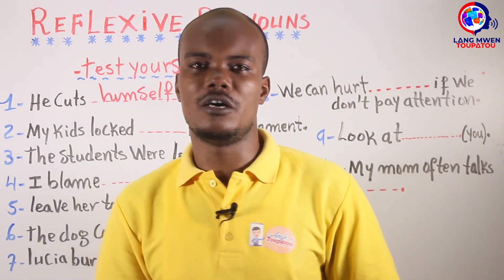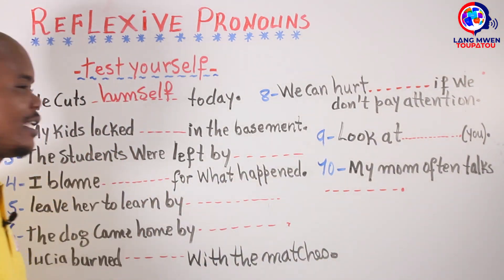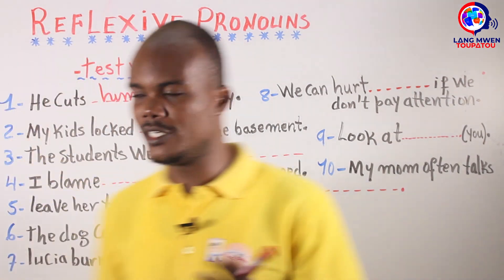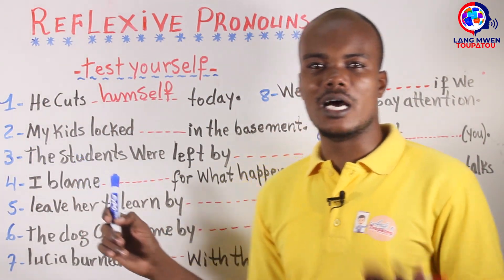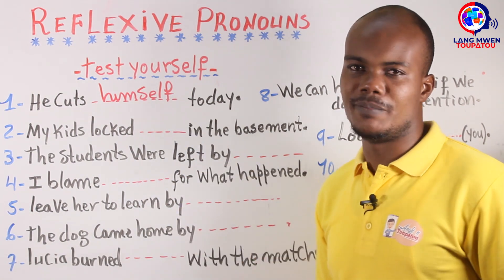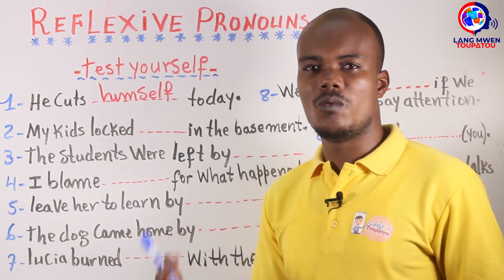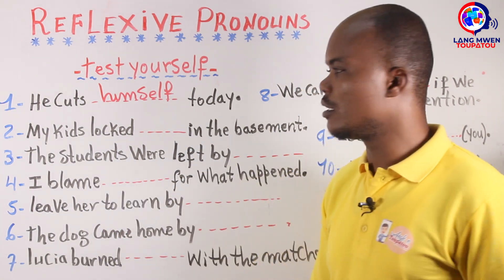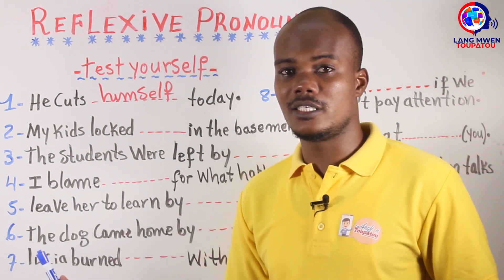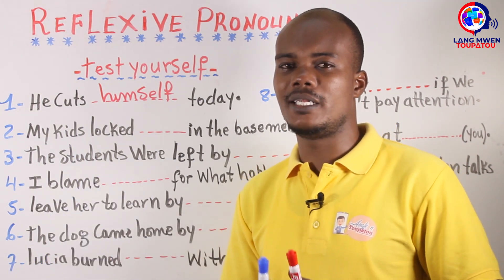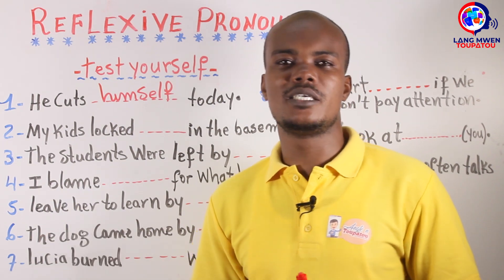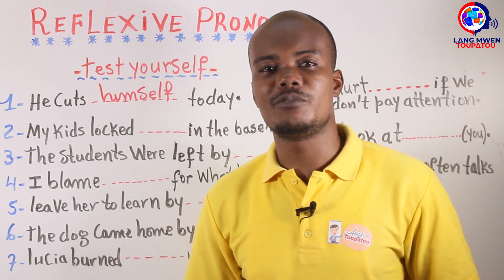Now, are you ready for the second one? The second one is: 'My kids locked ___ in the basement.' My kids — what is the subject? Kids. My kids. You should replace 'my kids' by a subject pronoun.